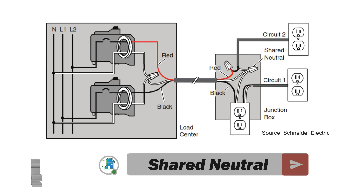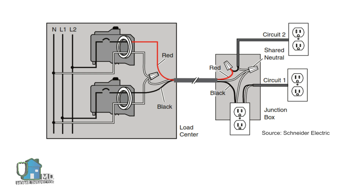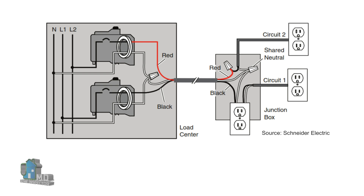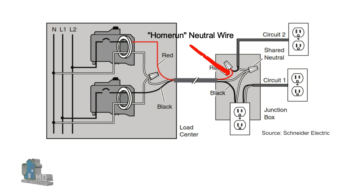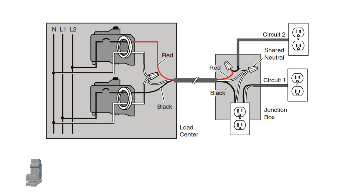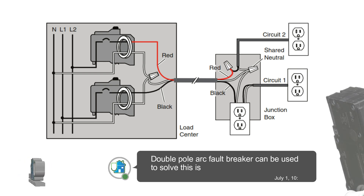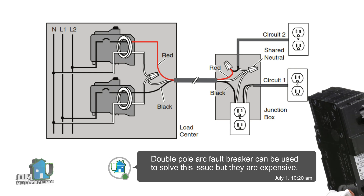A shared neutral is another issue. If an arc fault breaker is connected to a shared neutral, the single pole AFCI will not work properly. A shared neutral occurs when two circuits share a single home-run neutral wire back to the panel instead of running two separate neutral wires. This setup will not work with arc fault breakers, but one possible solution is to use a double pole arc fault breaker in its place.